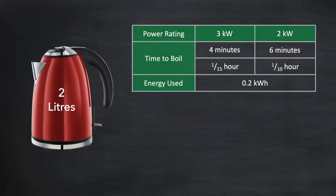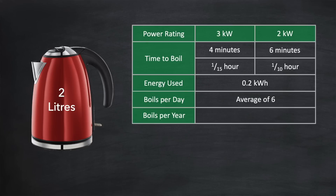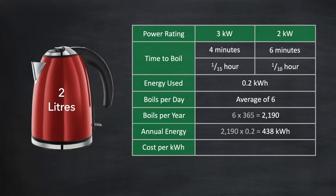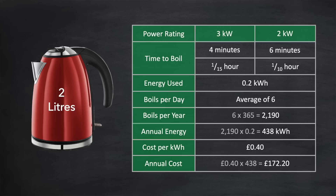Let's go a bit further and look at the amount of energy each kettle uses over a year. Let's assume an average of 6 boils a day — that works out to 2,190 boils over the course of a year. The annual energy requirement is that number multiplied by 0.2 to get 438 kilowatt hours. In the UK, a kilowatt hour of electricity is around 40 pence, giving a total cost of just over £172 for the year. If you're only making two or three cups every time you boil the kettle, not filling it up every time could save you nearly £100 a year.